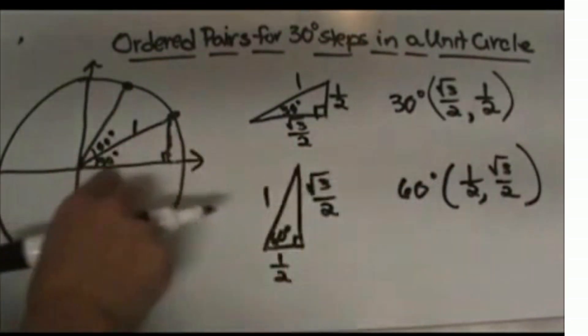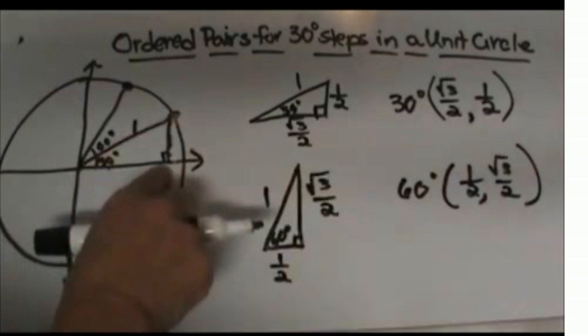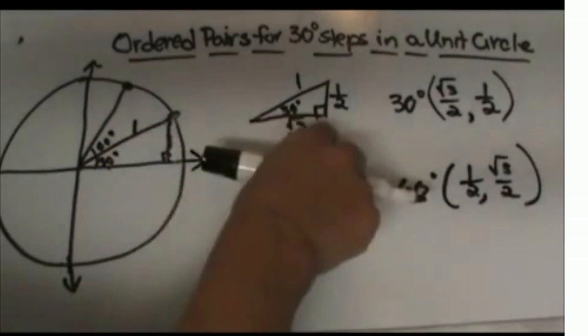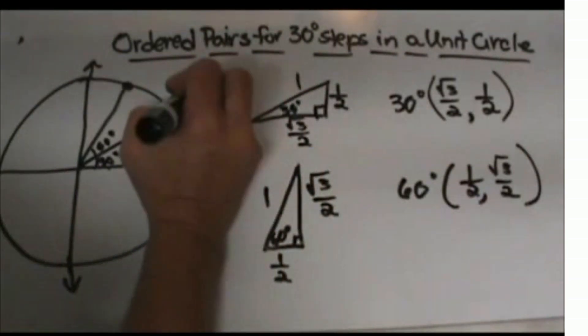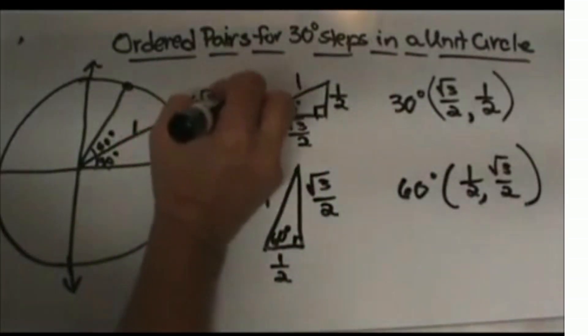That means this ordered pair up here would be the distance x, which is the longer distance, the long leg, and the distance up is your y, or 1/2. This ordered pair would be (√3/2, 1/2).